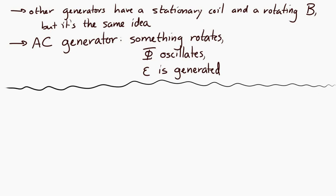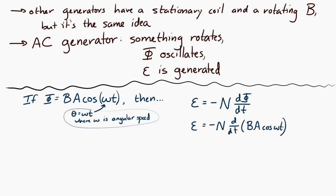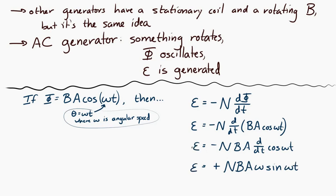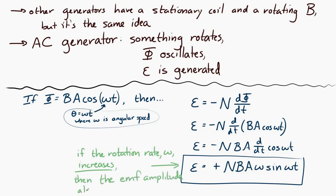We can also do a little calculus. If the flux is equal to BA cosine theta, and theta equals omega times T, where omega is the angular speed — the speed at which it's rotating — then applying Faraday's law with a little chain rule, the EMF generated is equal to NBA omega sine of omega T. The key point is that if the rotation rate of the coil increases, then the maximum value of the EMF will be greater. You'll get a greater amplitude of your EMF if it rotates faster.